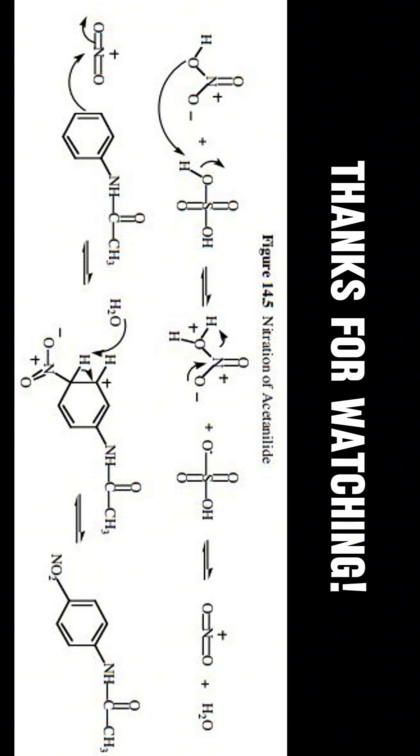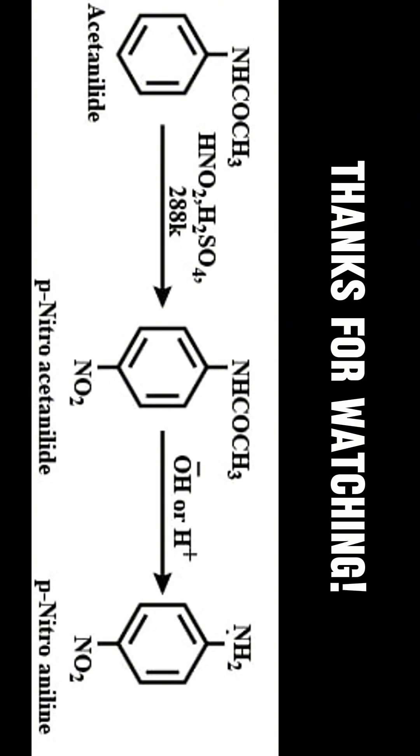Protonation forms metanitroaniline, which we don't want. The acetyl group of acetanilide, however, acts as a paradirector, which massively increases the yield.